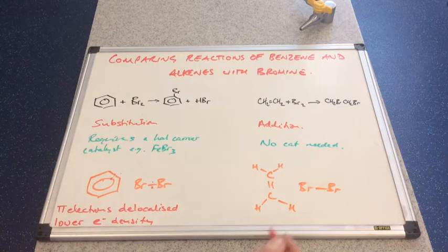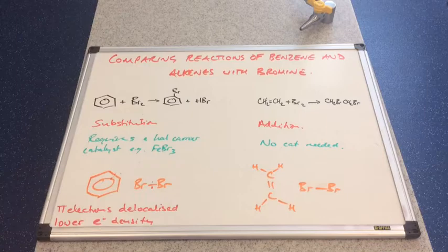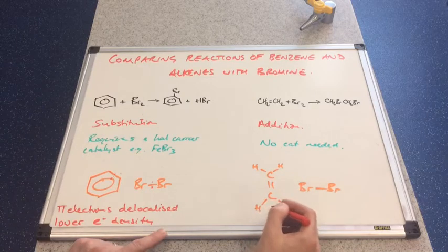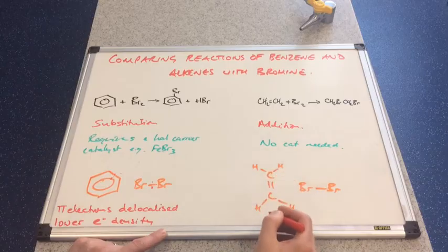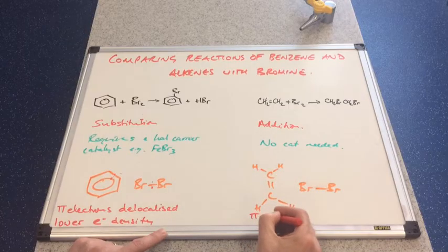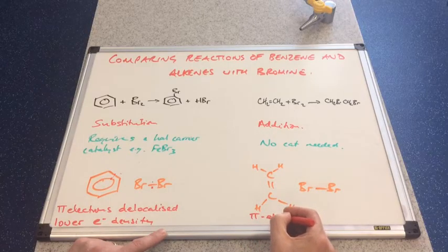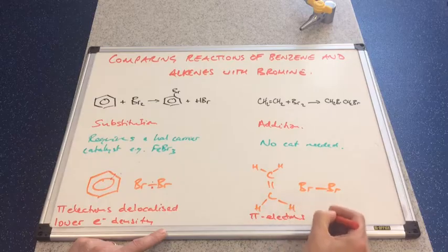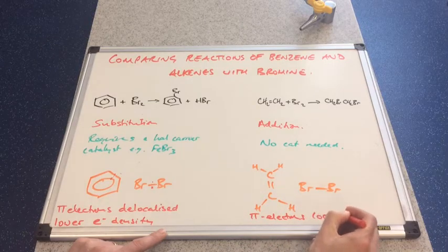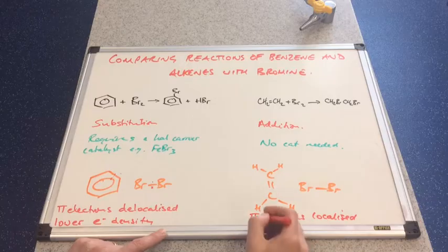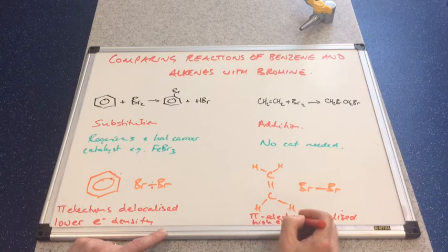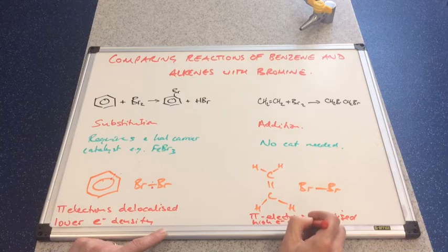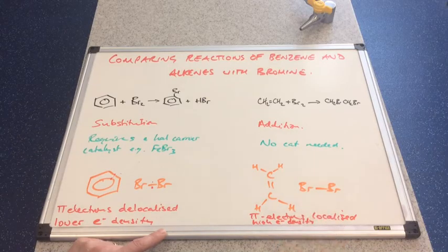So if we look at the alkene on the other hand, this has got its pi electrons shared between two carbons. So the pi electrons are localized, and because of that, the electron density is high. I hope you can see this. So high electron density in alkenes.